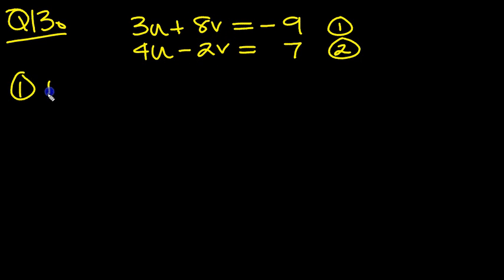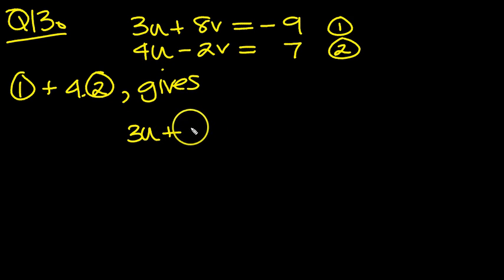So we'll do 1 plus 4 lots of 2, and that gives then, one of these is 3u plus 4 lots of 2 is 16u. 4 fours are 16. One of these is 8, 4 of these is 8, but we've got a minus, so that will go, that's why we're doing it.